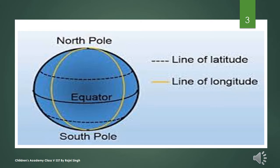An imaginary line drawn midway between the north pole and the south pole divides the earth into two equal parts. This line is the longest line of latitude and is known as the equator. In short, the equator is an imaginary line drawn mid-way between the north and south poles, dividing our earth into two equal parts.